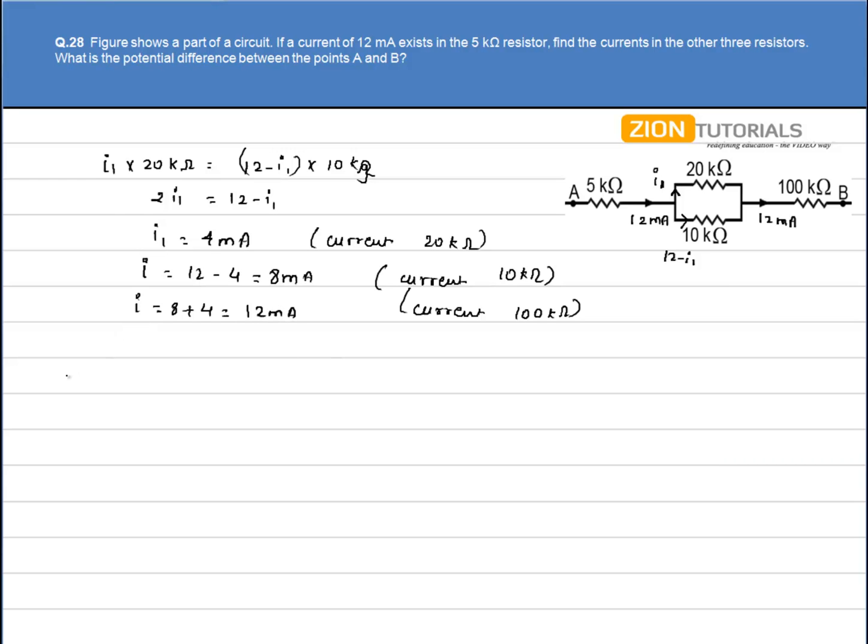To calculate the potential difference between points A and B, we apply Kirchhoff's voltage law. Starting from point A: Va - (5×10³ × 12×10⁻³) - (20×10³ × 4×10⁻³) - (100×10³ × 12×10⁻³) equals Vb.